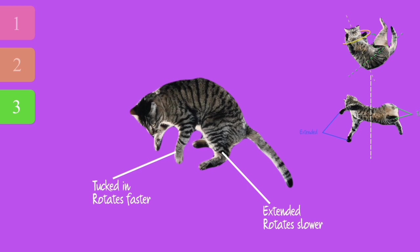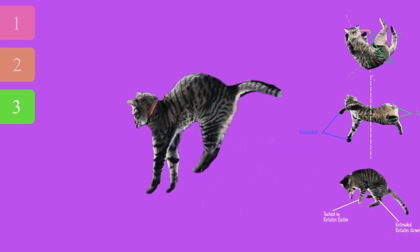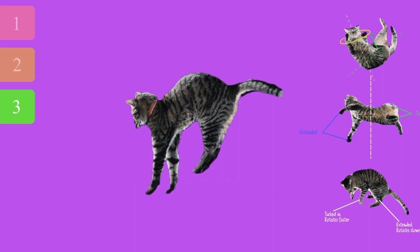The front half will then also face the ground the right way. The cat can repeat the last two steps until its legs are facing the ground and it can comfortably land on its feet.